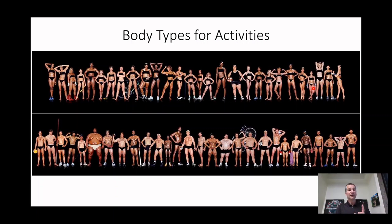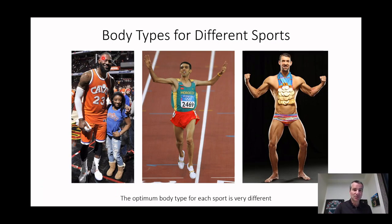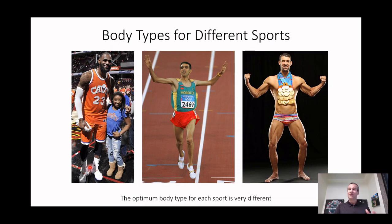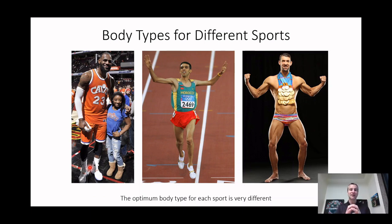When we look at elite athletes, consider these two incredible examples: LeBron James, one of the greatest basketball players, and Simone Biles, probably the greatest gymnast ever. She's almost half as tall as LeBron. They have extraordinarily different sports, so they need very different body types to perform at the elite level.